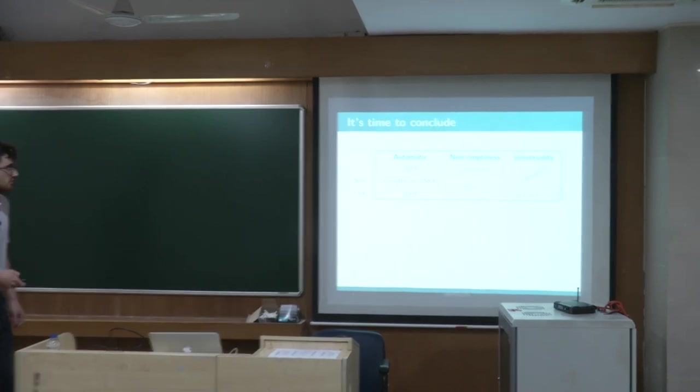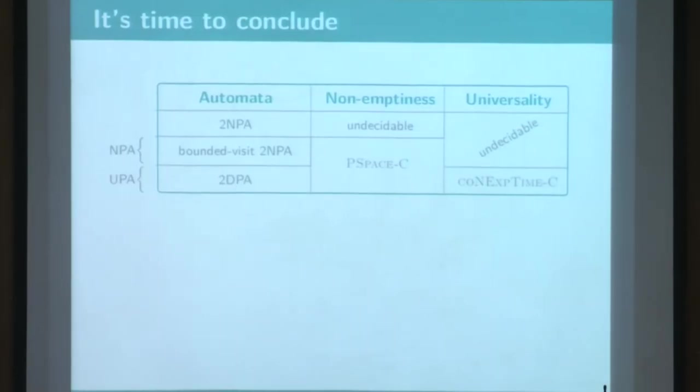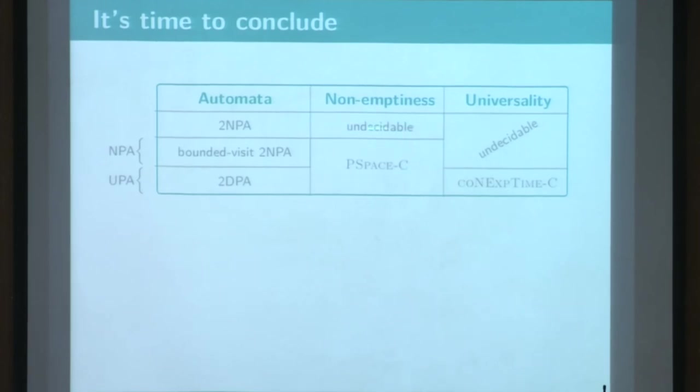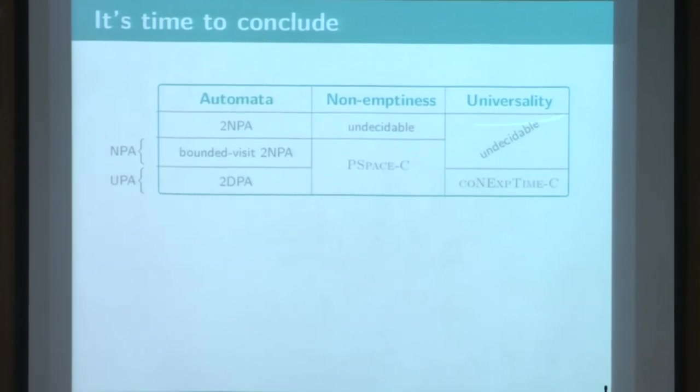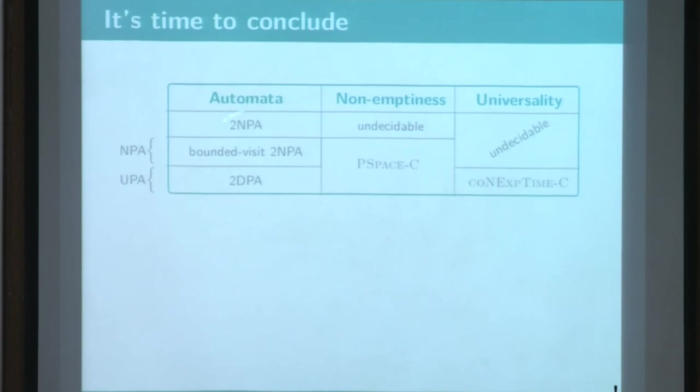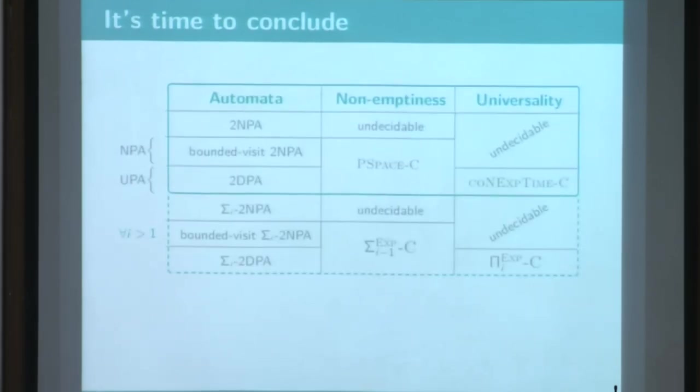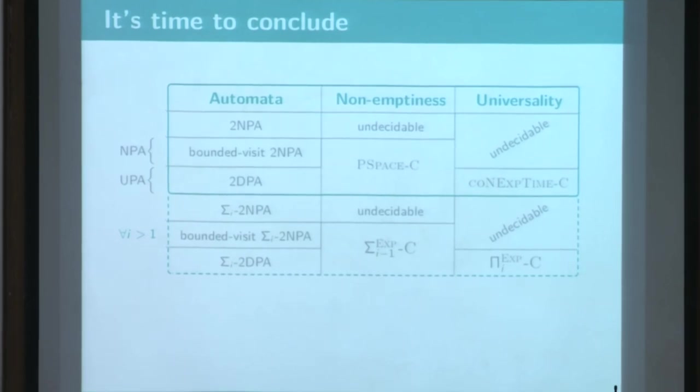So, this is a result I've just shown you. We have an undecidable problem for both non-emptiness and universality for two-way Parikh automata. Then it's PSPACE for deterministic and bounded visits. This can be translated to NPA, this to unambiguous. And all those results can be extended somehow with this sigma i acceptance condition with those complexities.